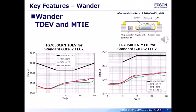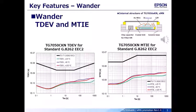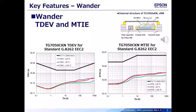The K and M series TCXO's TDEV and MTIE offer compliance to the G.8262 standard with sufficient margin. It is the unique double-sealed package structure that isolates the crystal unit from the effects of external disturbances, ensuring that both stability and good Wander characteristics are maintained.